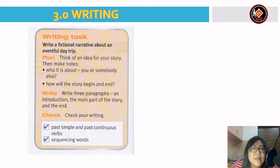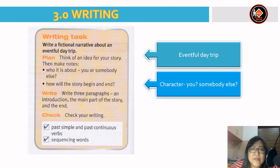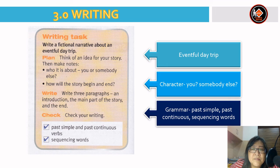Let's get the writing task. Write a fictional narrative about an eventful day trip. Plan: think of an idea for your story and make notes — who is it about, you or somebody else? How will the story begin and end? Write three paragraphs: an introduction, the main part of the story, and the end. Then check your writing. Try to use past simple and past continuous verbs and also sequencing words. Remember to write about an eventful day trip, decide on your character, and use past simple, past continuous, and sequencing words.